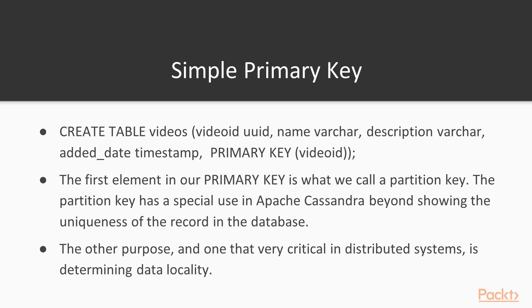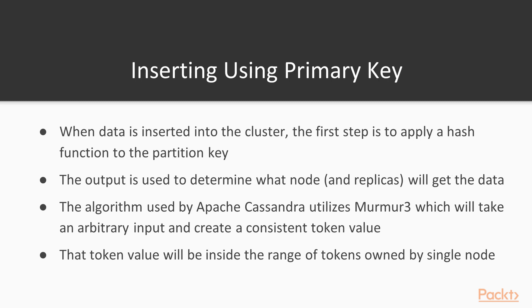The first element in our primary key is what we call the partition key. The partition key has a special use in Apache Cassandra beyond showing the uniqueness of a record. Its other critical purpose in a distributed system is determining data locality. When data is inserted into the cluster, a hash function is applied to the partition key. Apache Cassandra uses Murmur3, which takes arbitrary input and creates a consistent token value that falls within the range of tokens owned by a single node.